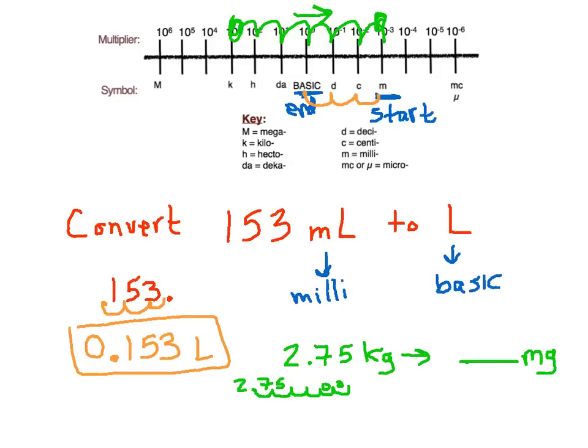And we can go back and put in our zeros. And we're going to have 2, 7, 5, and then 4 zeros, which will result in 2,750,000 milligrams.